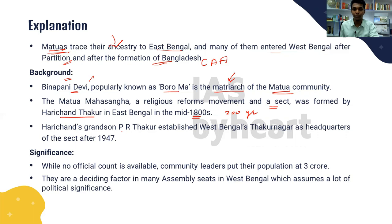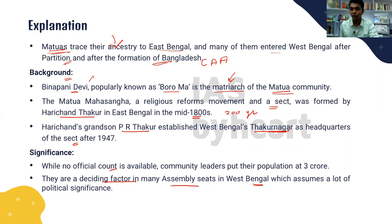The Matua Mahasangha is a religious reform movement and sect formed by Harichand Thakur in East Bengal in the mid-1800s — a nearly 200-year-old institution. Harichand's grandson P.R. Thakur established the headquarters at Thakurnagar in West Bengal after 1947. The community was recently in the news because they are the deciding factor in many assembly constituencies in West Bengal, where elections are due, and community leaders put their population at three crore.